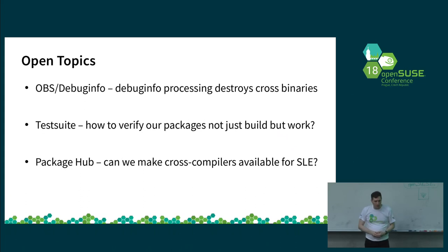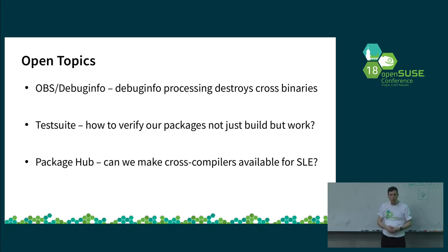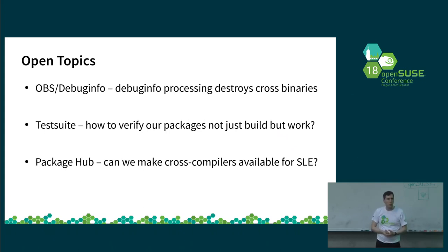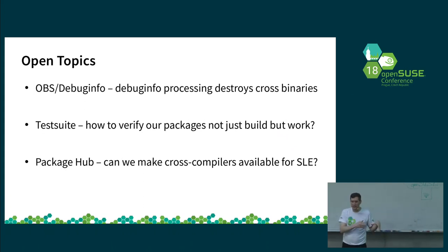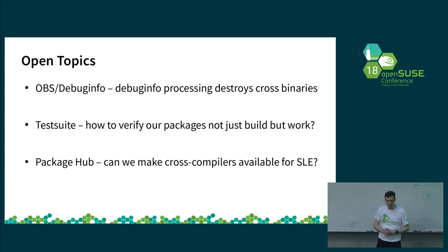One more topic mentioned in the Package Hub talk: it would be useful to make some of those cross-compilers available not just for OpenSUSE in OBS but also for the commercial SUSE Linux Enterprise family. There are certain rules in the way: SUSE is already shipping GCC compilers for SLE code, so we cannot simply submit the GCC 7 or GCC 8 packages that the cross-compilers are now part of into Package Hub, as that would conflict with the packages SUSE is providing.